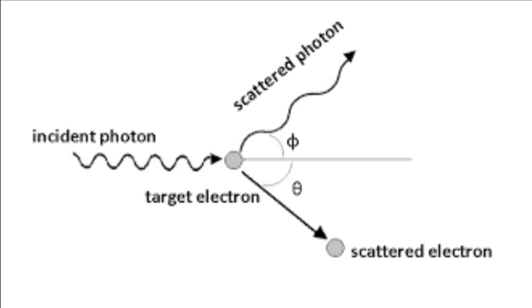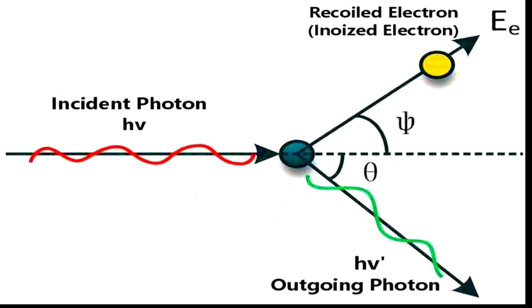For example, this diagram shows how a photon can scatter off an electron by exchanging a virtual photon, which is a temporary fluctuation of the electromagnetic field.